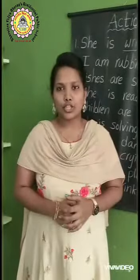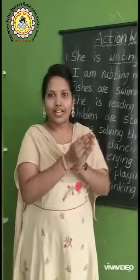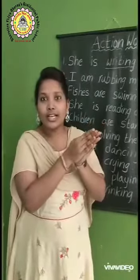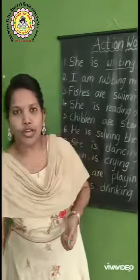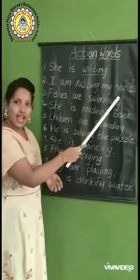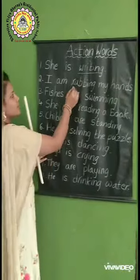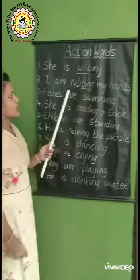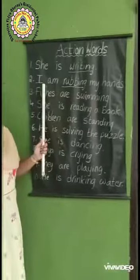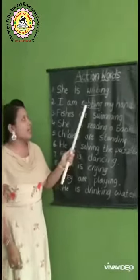Next. See children, what I am doing here? Rubbing. Very good. I am rubbing my hands. What is the action word here? Rubbing. Very good. Look at the code, all of you — I am rubbing my hands. Underline all of you. Spell it: R-U-B-B-I-N-G. Rubbing. I am rubbing my hands. What is the action here? Rubbing.